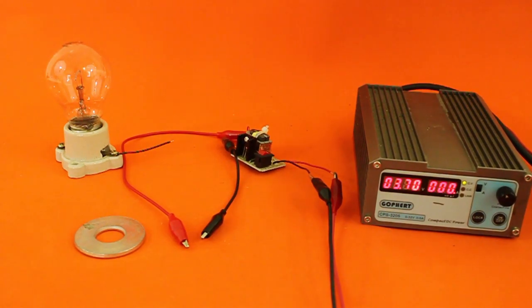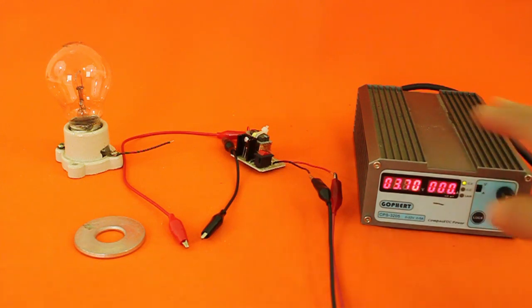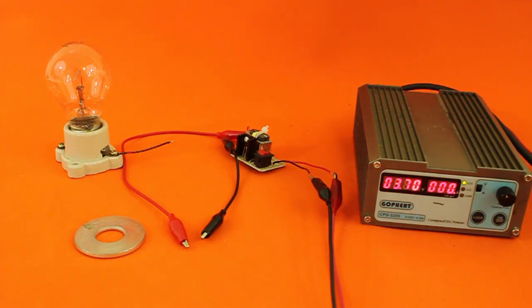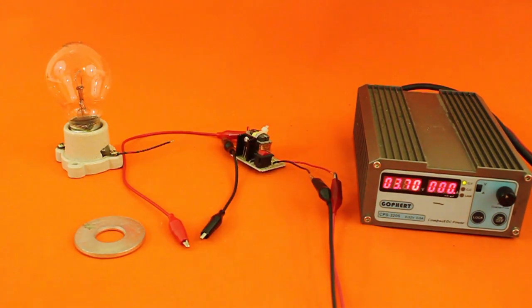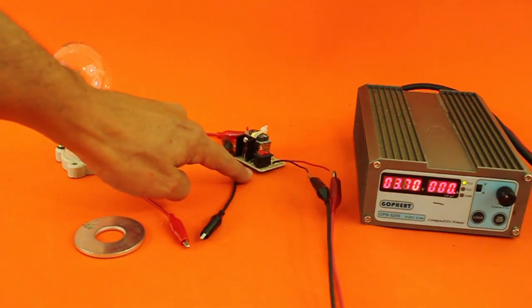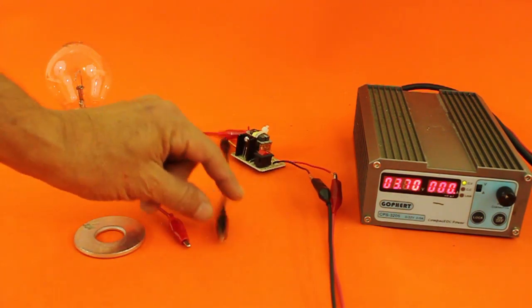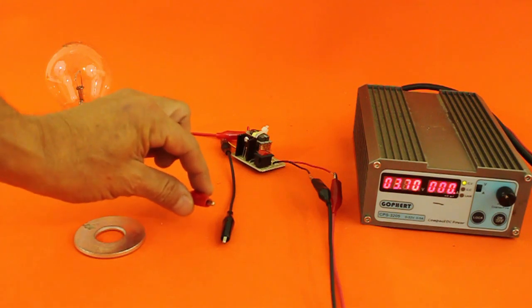Let's now see the connections that are very simple. We need 3.7 volts from our power supply. You can also use a lithium-ion battery. It also gives you 3.7 volts and from that we feed the high voltage power supply.